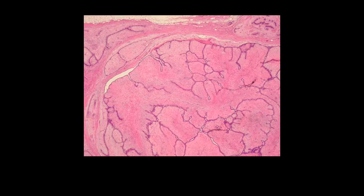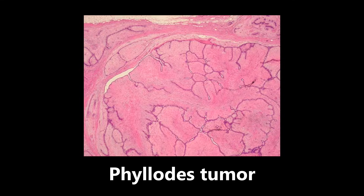This next one is a pretty hard image, but I've seen it several times on the boards. It is an example of a phyllodes tumor — a tumor of the breast. There's not much information to provide with this one. The best that I can give you is that it has a leaf-like appearance. There's not really any other way to differentiate it on histology, but if you see something that kind of looks leaf-like, you want to be thinking about a phyllodes tumor of the breast.